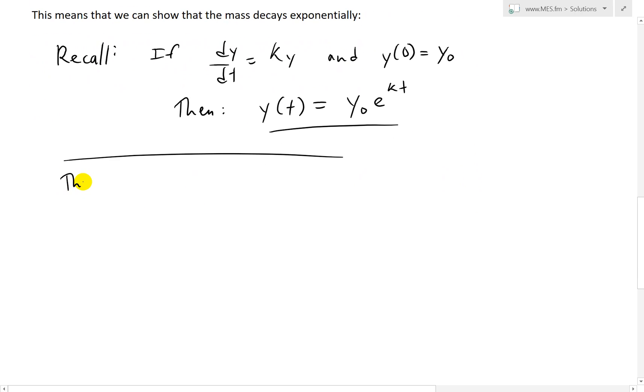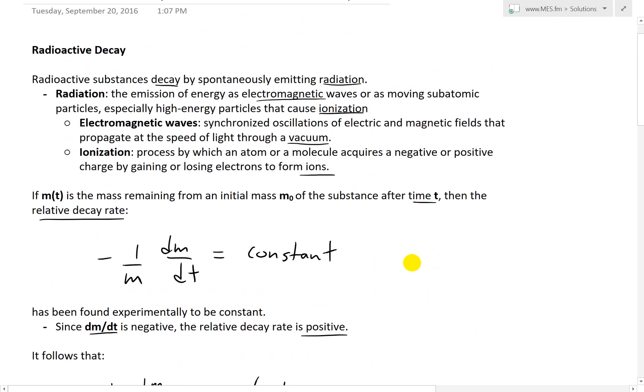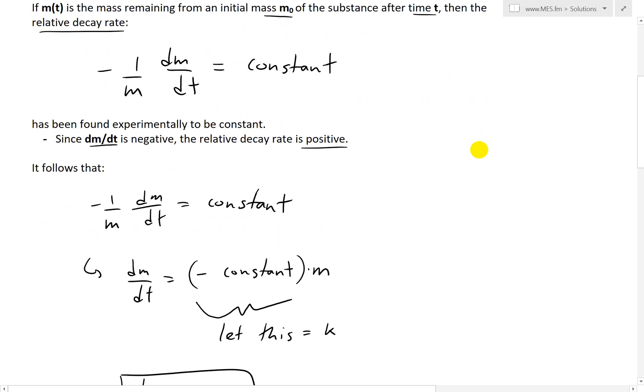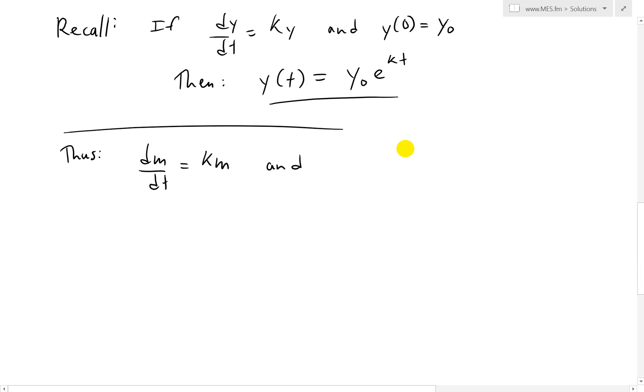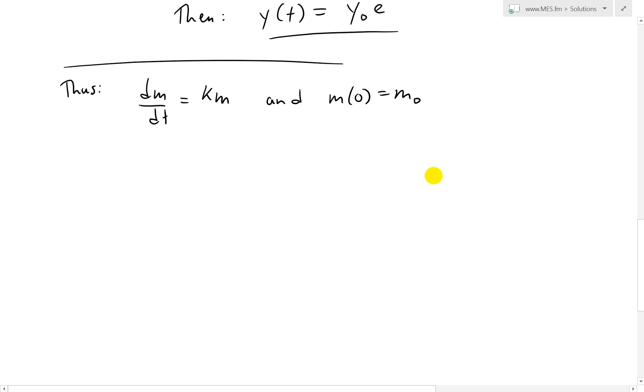Thus, for our case, we have dm/dt = Km. And we also have, because we stated it over here, m₀ is the initial mass. So we also know that at t equals zero, m = m₀. So what we have is, if this is equal to this...